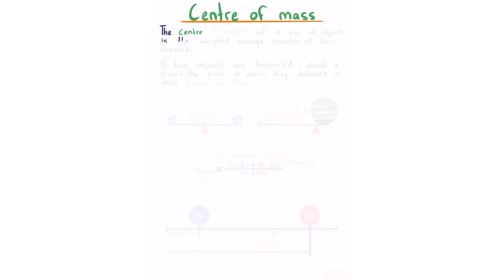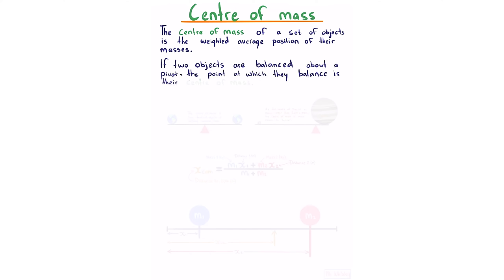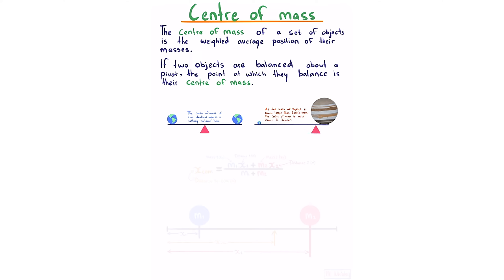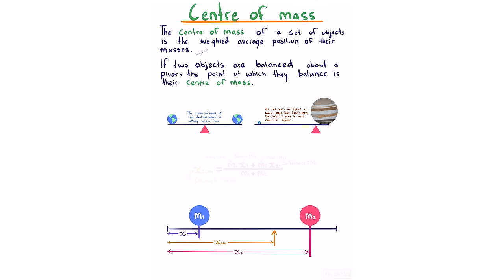Centre of mass. The centre of mass of a set of objects is the weighted average position of their masses. Two identical objects have their centre of mass halfway between them, while replacing one with a much larger Jupiter-like mass shifts it much nearer to the larger mass. For two masses m1 and m2, the x-coordinate of the centre of mass is calculated by weighting positions by mass and averaging. Setting x1 to zero simplifies the mathematics greatly.